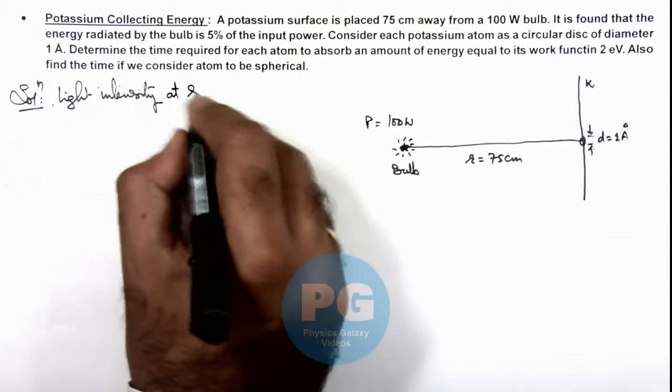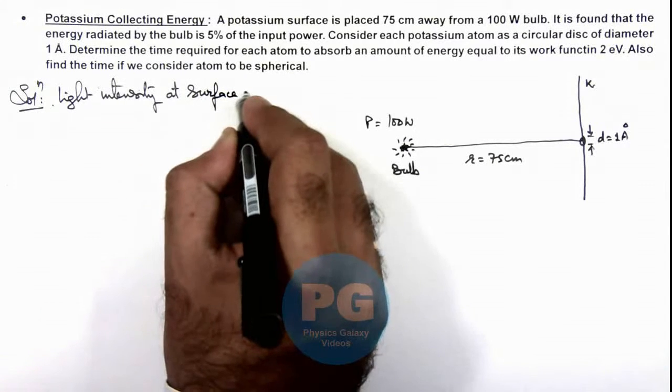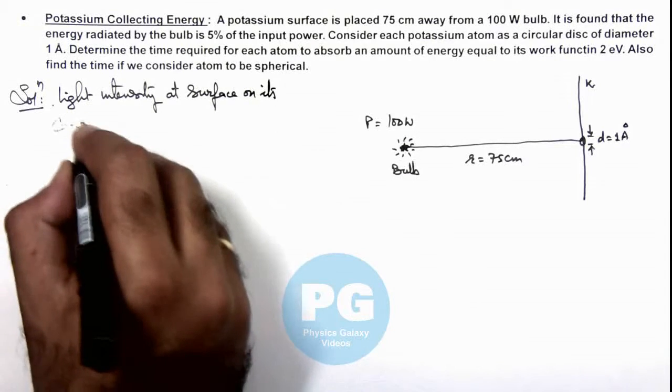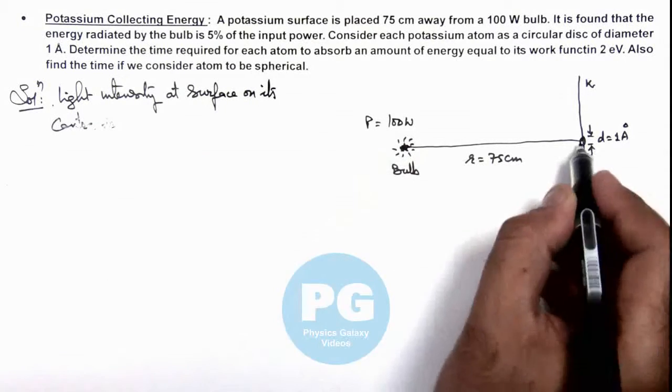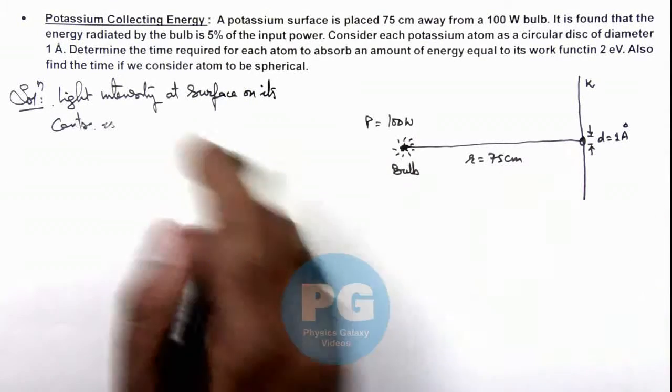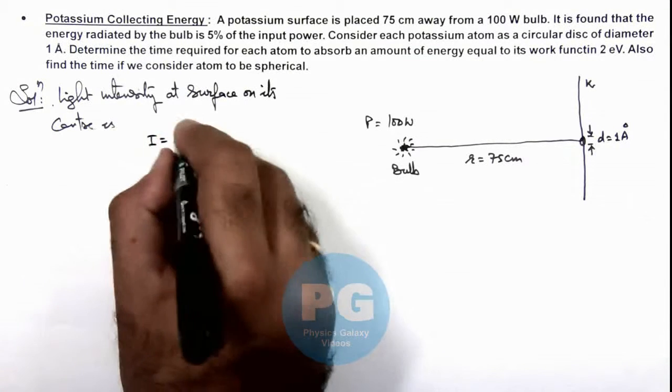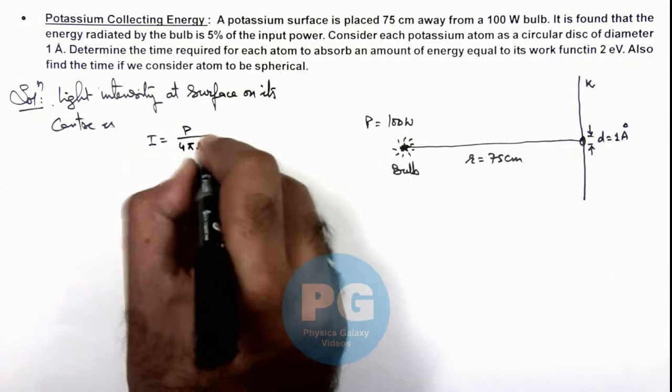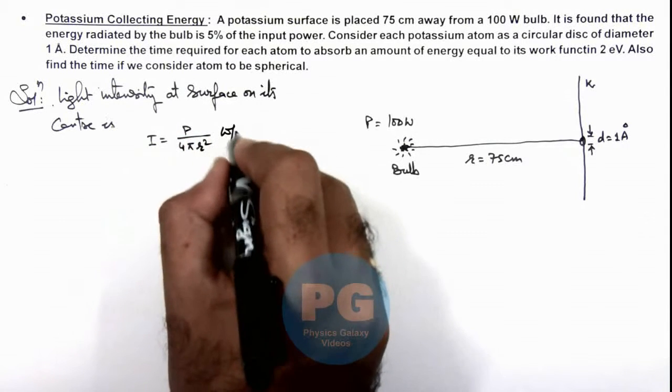The intensity at the center of the surface in front of the bulb is P/(4πr²), given in watts per meter squared.